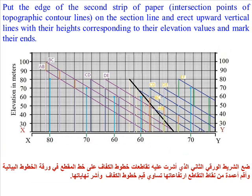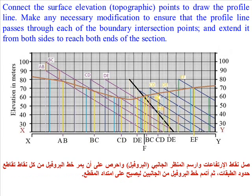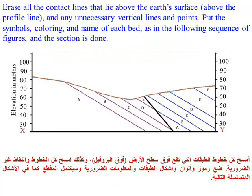Place the edge of the second strip of paper on the section line and erect upward vertical lines with heights corresponding to their elevation values; mark their ends. Superimpose the boundary intersection point strip on the section line and from each boundary point erect a vertical line to cut the corresponding boundary line. Connect the surface elevation points to draw the profile line, making any necessary modifications to ensure the profile passes through each boundary intersection point, and extend it from both sides to reach both ends of the section. Erase all contact lines that lie above the earth's surface and any unnecessary vertical lines and points.